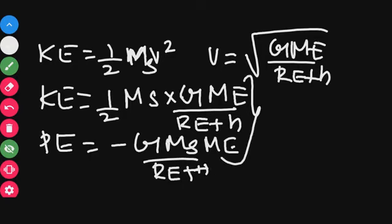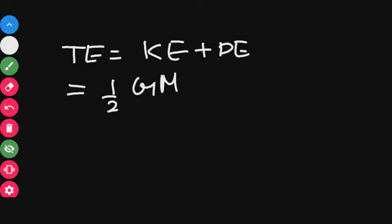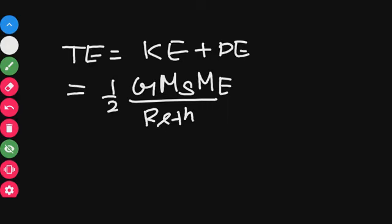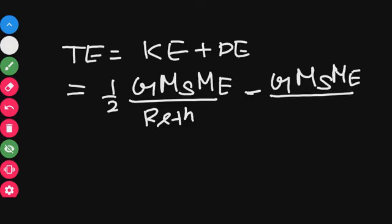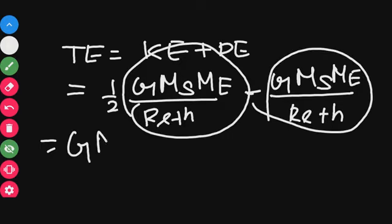Total energy is just the two added: sum of kinetic energy plus potential energy. Kinetic energy is half into G times Ms times Me divided by Re plus h. Potential energy is minus G times Ms times Me divided by Re plus h. The term GMs times Me divided by Re plus h is constant.